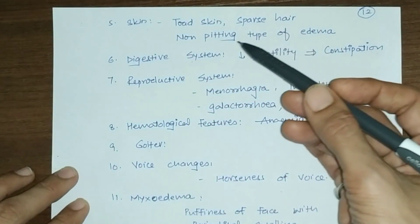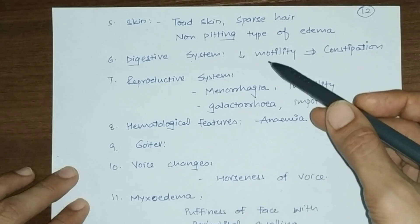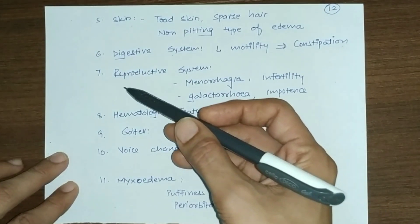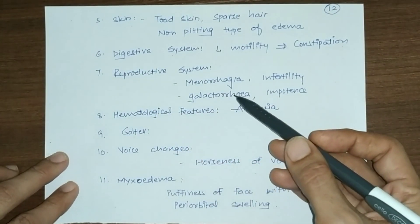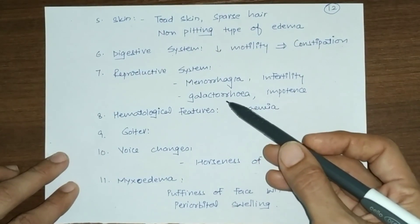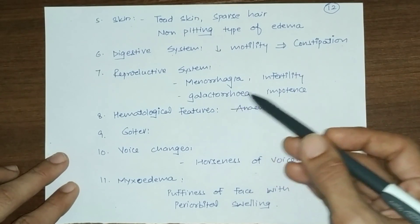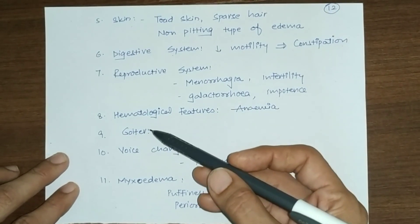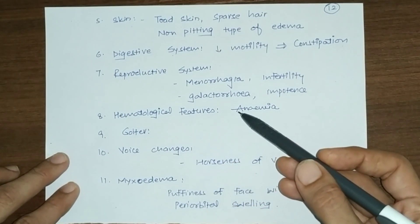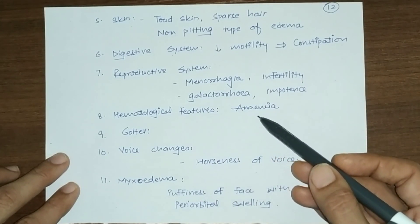Dermatological features include toad-like skin, sparse hair, and non-pitting type edema. Digestive system motility decreases resulting in constipation. Reproductive system effects include menorrhagia (excessive menstruation), infertility, and sometimes galactorrhea (milk secretion in the absence of pregnancy).